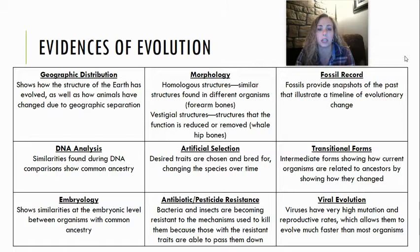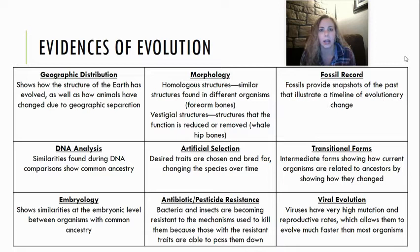Vestigial structures are also part of morphology. These are structures that over time are reduced or removed functionally — like the whale has hip bones. Whales don't even have legs, so why do we have hip bones floating around in there? Because those are vestigial structures, and because their ancestors had legs and thus the need for those hips.